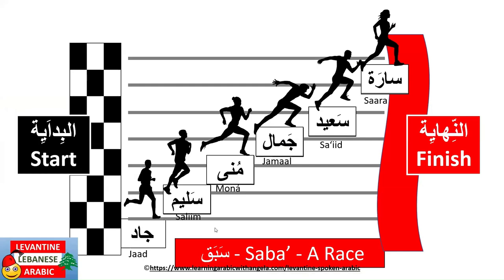Now we have a سباق — a race. سباق ركض — a running race. هون البداية — the start. هون النهاية — the finish. Pause the screen and try to think: مين الأول؟ مين التاني؟ مين التالت؟ And so on. Be mindful when doing this exercise of masculine and feminine — whether you need to use masculine or feminine ordinal numbers.